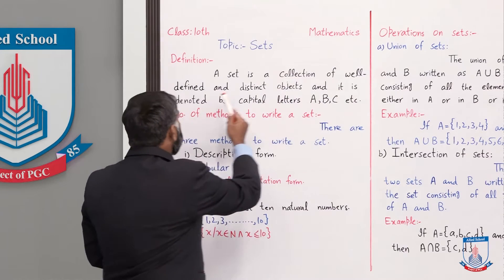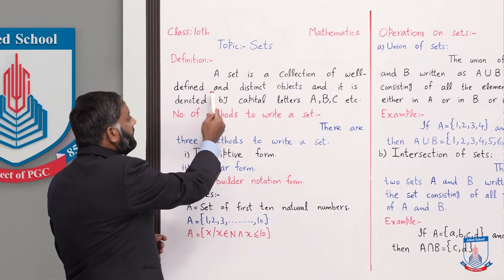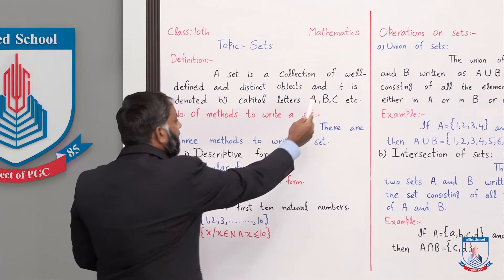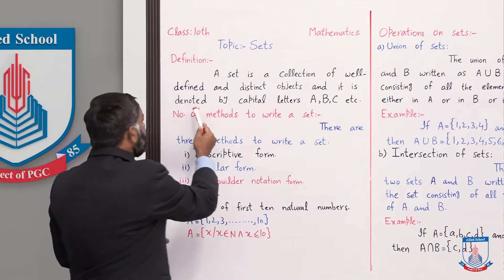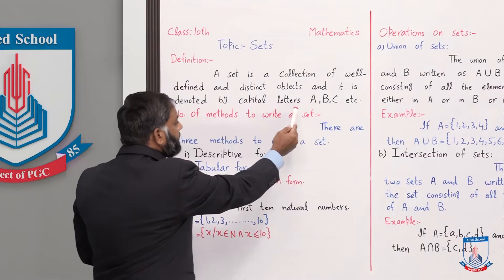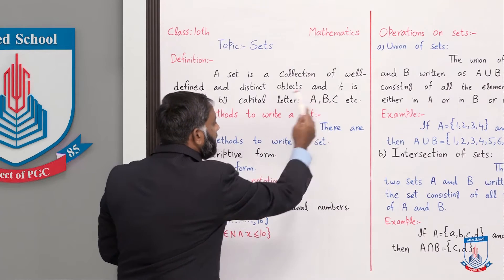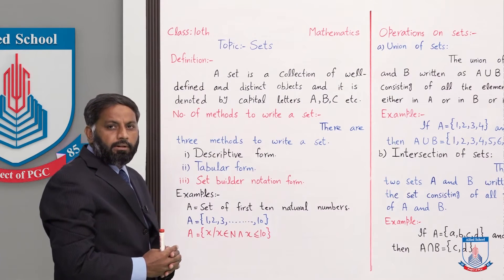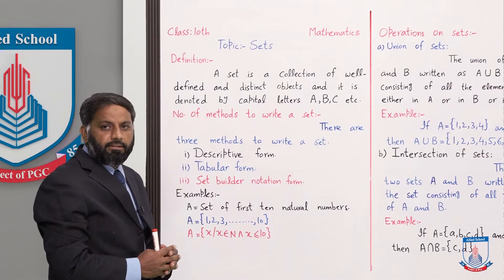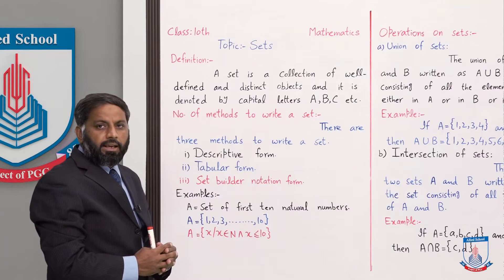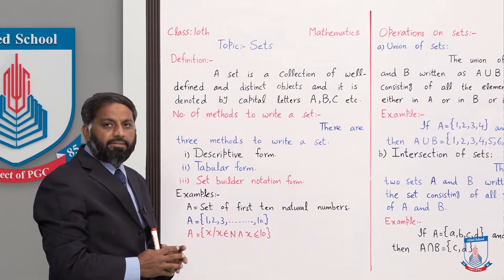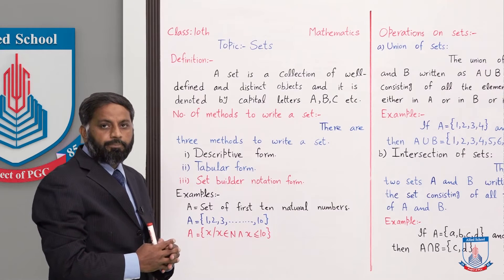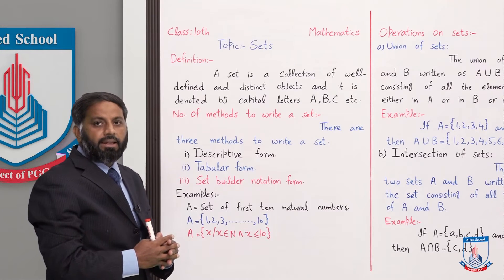A set is a collection of well-defined and distinct objects, and it is denoted by capital letters A, B, C etc. Well-defined means ایسے elements یا ایسے alphabets جن کی کوئی definition ہو — جیسے ہم کہتے ہیں...